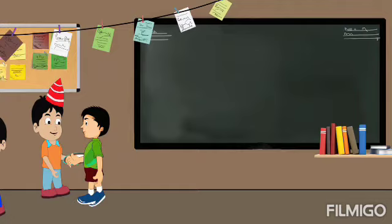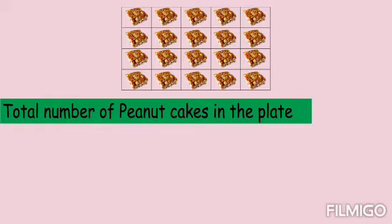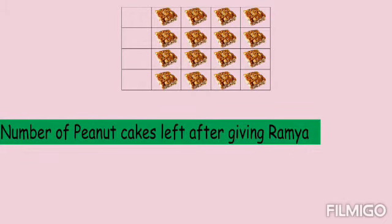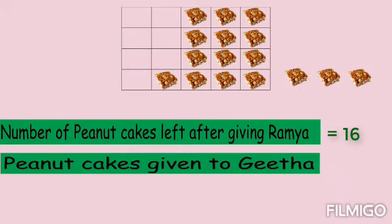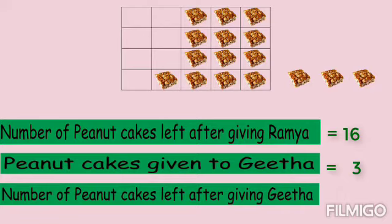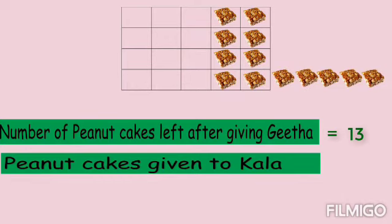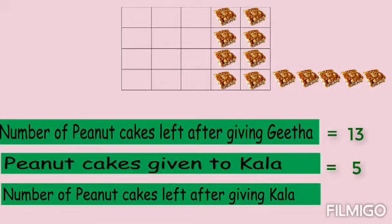Then how many peanut cakes would Gopi get? We can create this as a subtraction fact. Total number of peanut cakes in the plate is equal to 20. Peanut cakes given to Ramya is equal to 4. Number of peanut cakes left after giving Ramya is equal to 16. Peanut cakes given to Geeta is equal to 3. Number of peanut cakes left after giving Geeta is equal to 13. Number of peanut cakes given to Kala is equal to 5. Number of peanut cakes left after giving Kala is equal to 8.